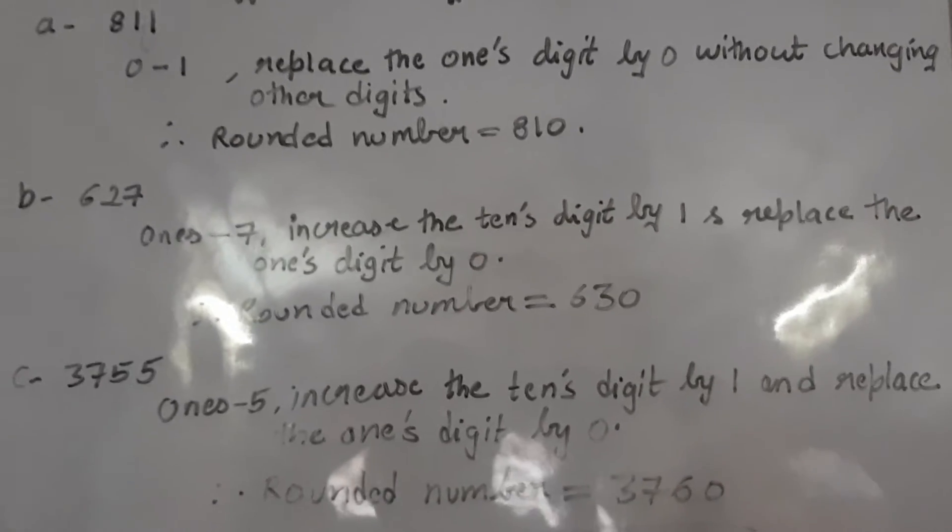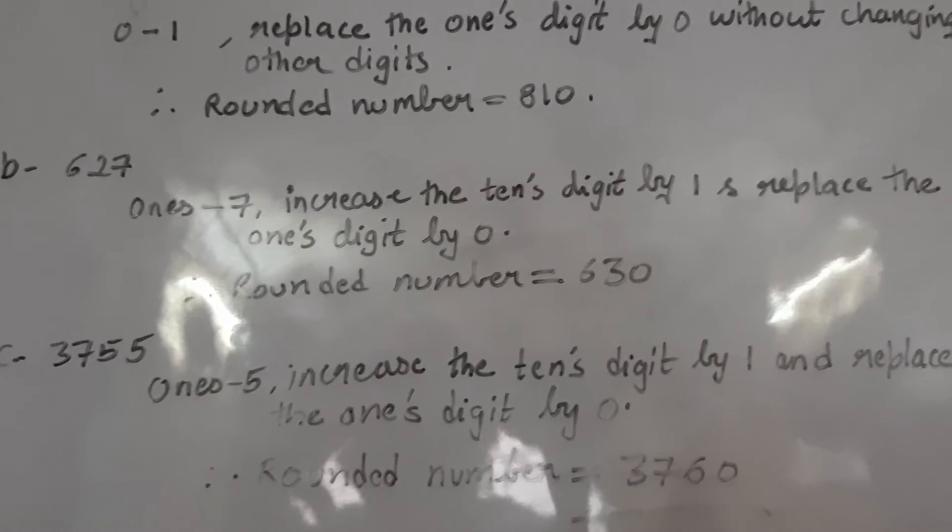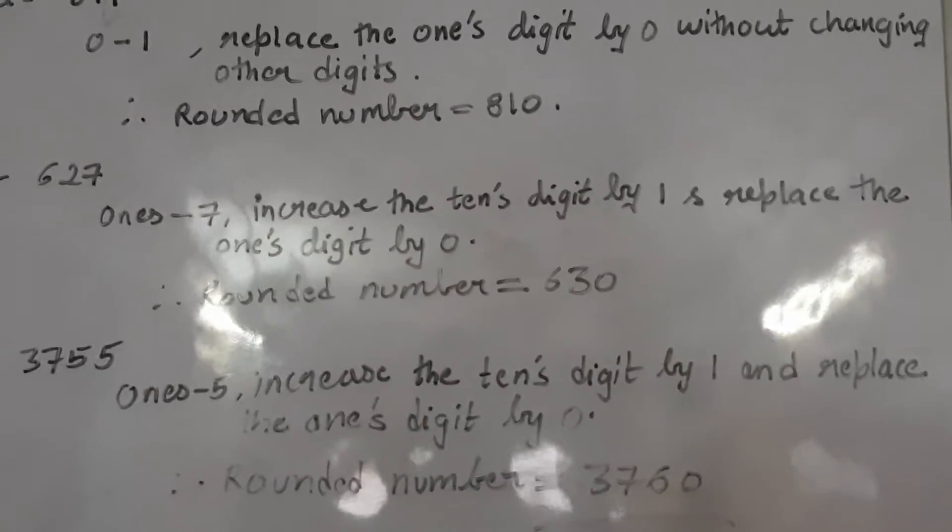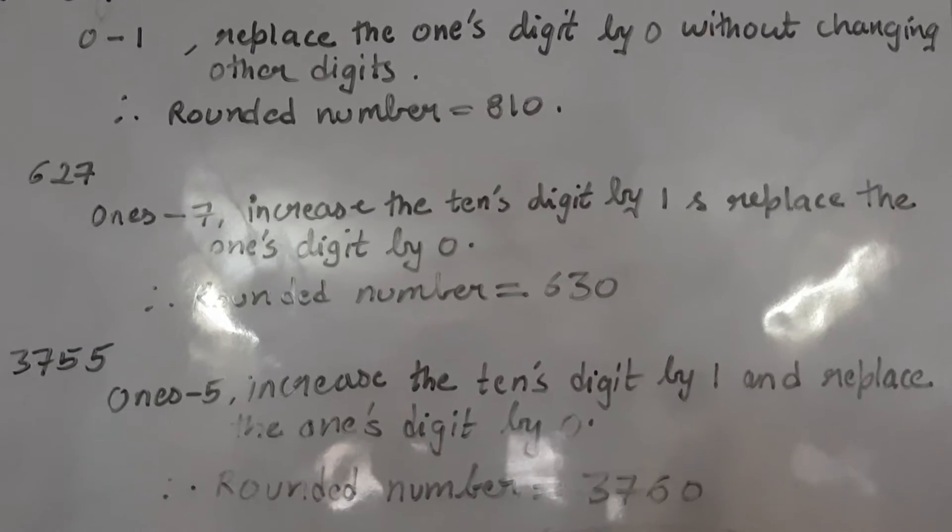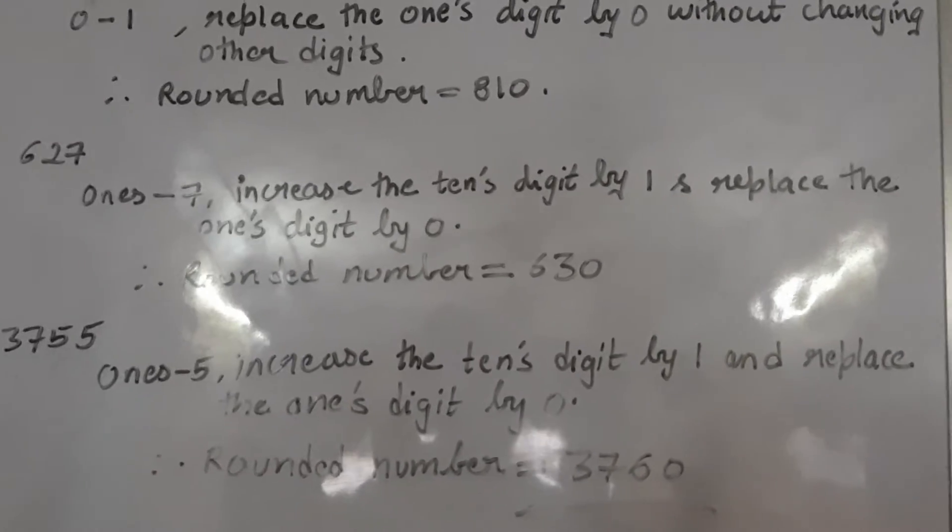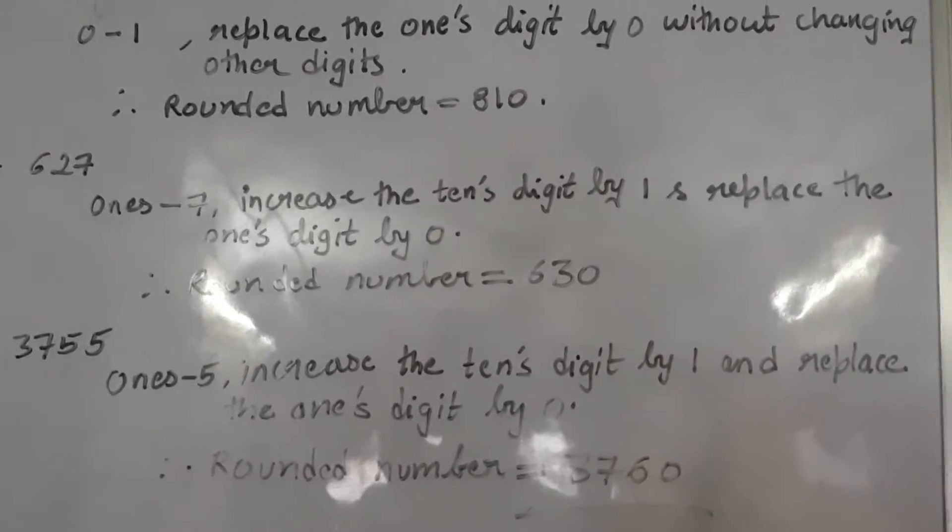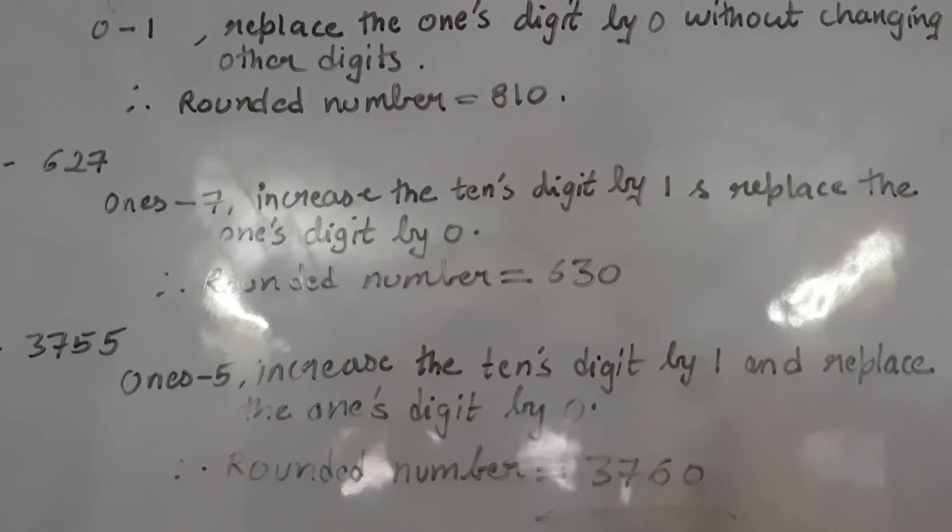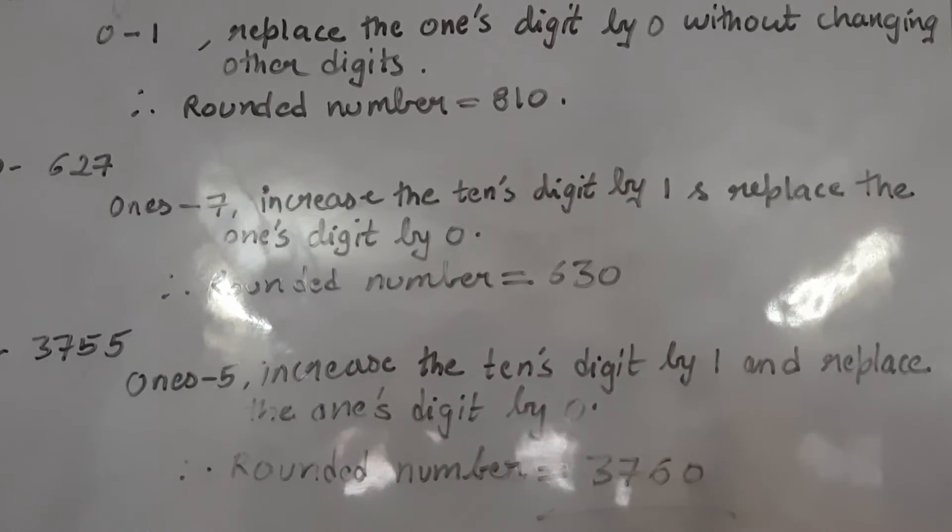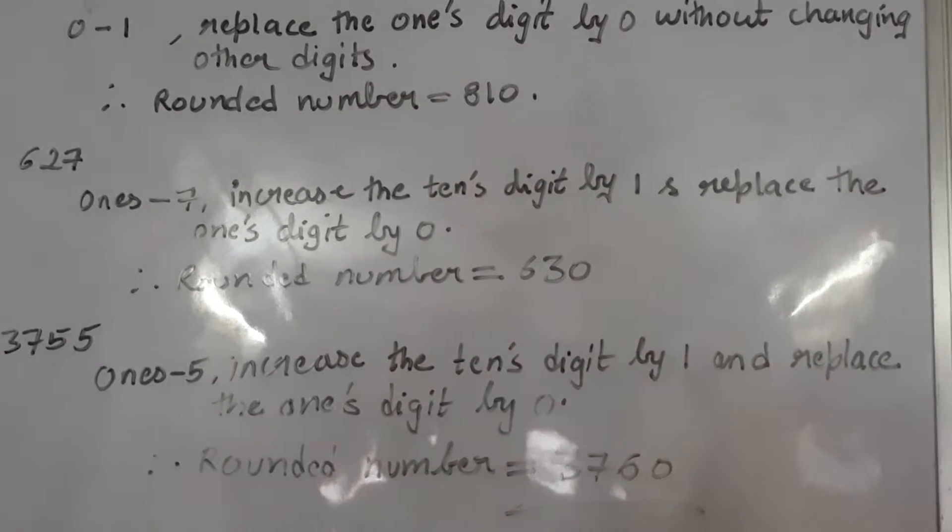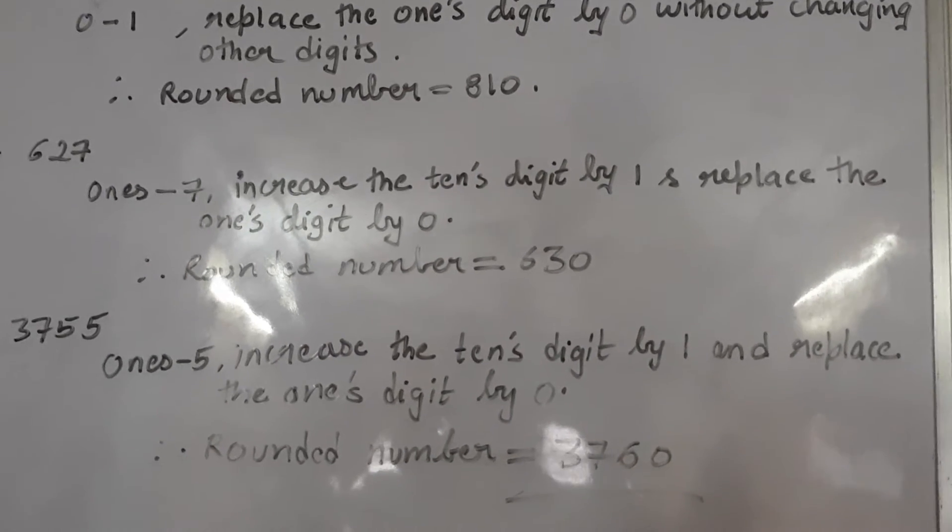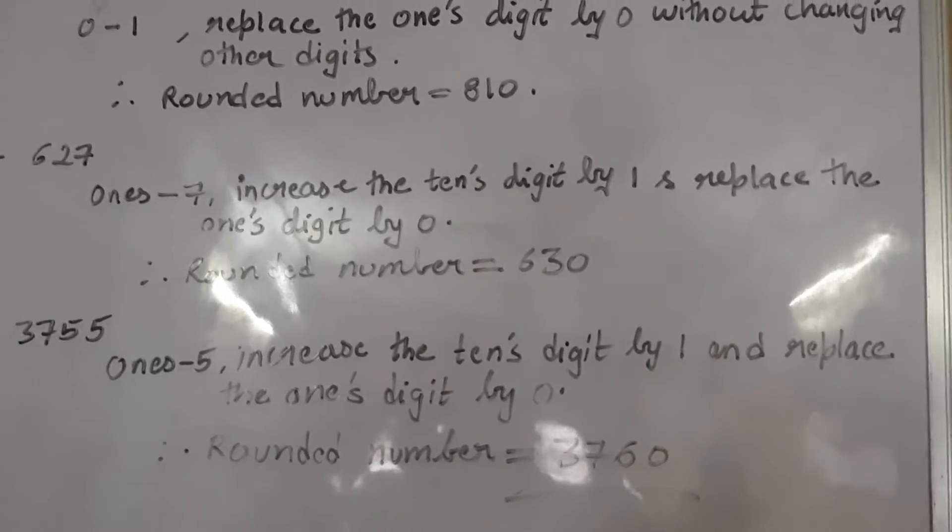Now after that, second example says 627. So always check the number at 1's place. So 7 is coming at 1's place. And it is more than 5. It means you will add 1 to the 10's digit number. And you will directly write 0 in place of 1's digit. And after rounding it you will get 630.